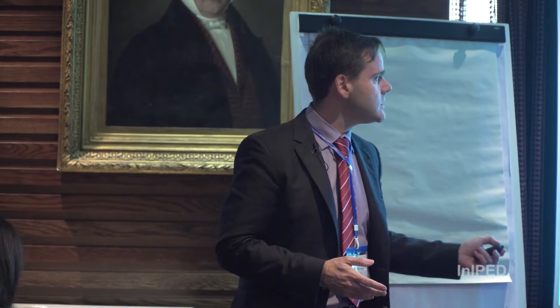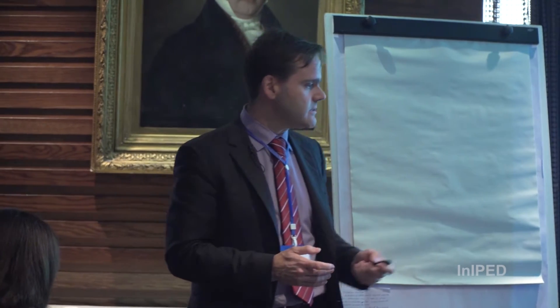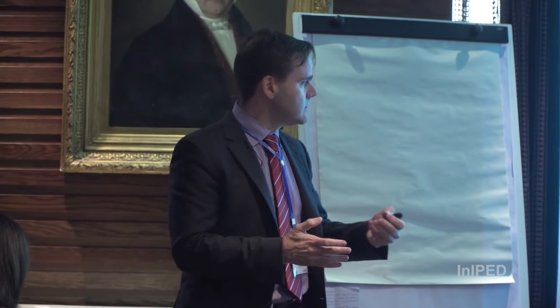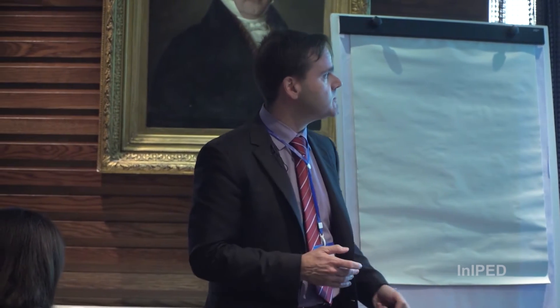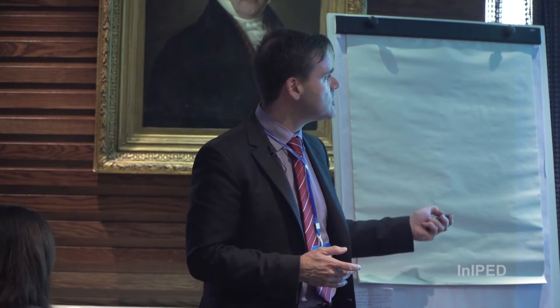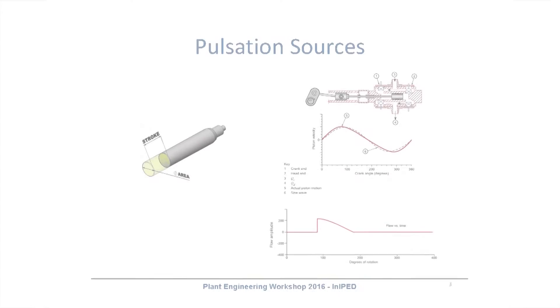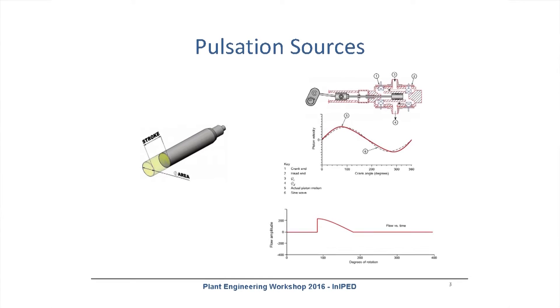Let's go to the concept. As you might know, just for everybody that doesn't know where pulsation comes from — pulsation comes from the nature of operation of a pump or a compressor. If you use a piston like this one where you have a stroke and an area, it will be moving back and forward as you can see here.